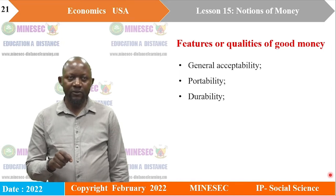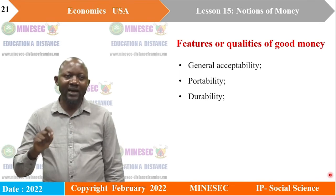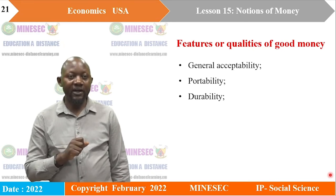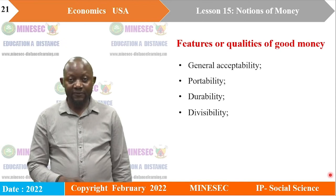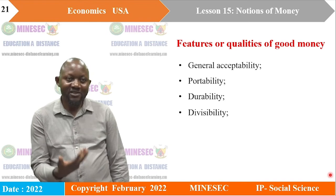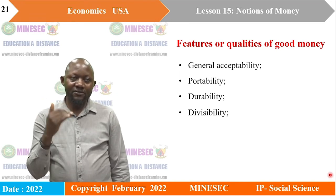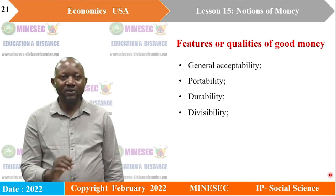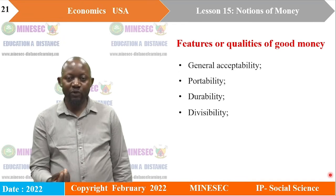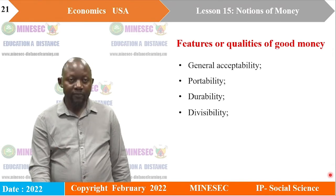Durability is another feature. Good money should be made of material that cannot easily deteriorate in a short time. Coins are more durable than banknotes. Divisibility is also required: for any commodity to serve as good money, it should be capable of being subdivided into smaller units to ease transactions of smaller values. Our CFA franc is subdivided into many units — 10,000, 5,000, 2,000, 1,500, down to even one or two francs — permitting those who want to conduct small-value transactions to do so easily.